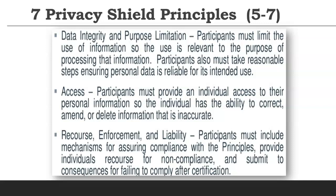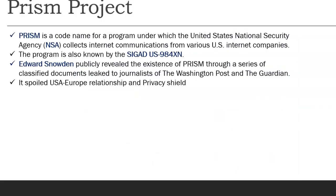Any country without a privacy law that wants to do business with Europe can subscribe to the Privacy Shield program, as the US did in 2016. There is also the PRISM project — a code name for a program under which the US National Security Agency (NSA) collected internet communications from various US internet companies. It is also known by the SIGAD US-984XN. Edward Snowden publicly revealed PRISM's existence through classified documents leaked to the Washington Post and The Guardian, which was major news and damaged US-European relations.